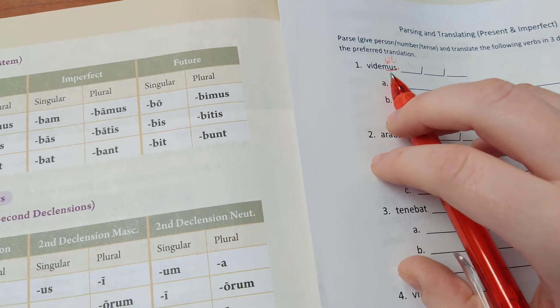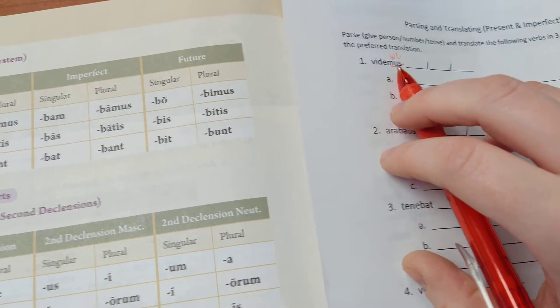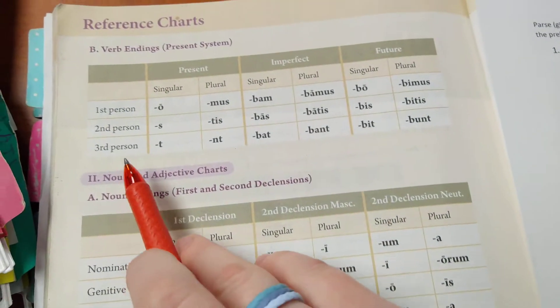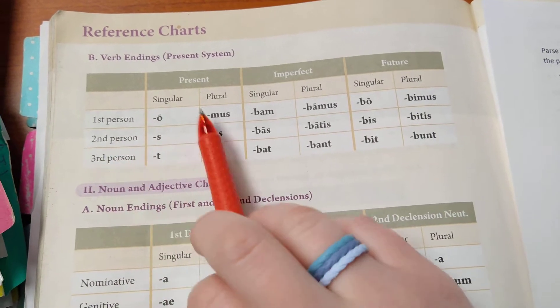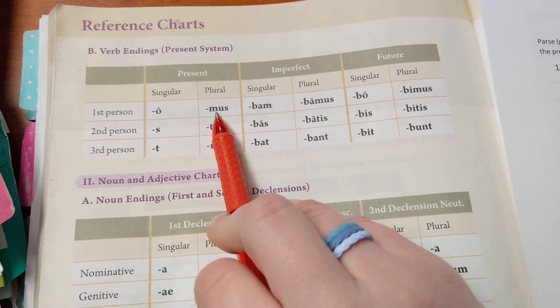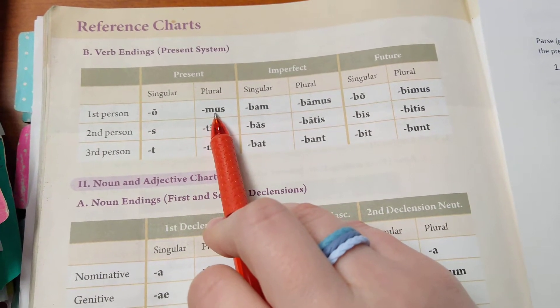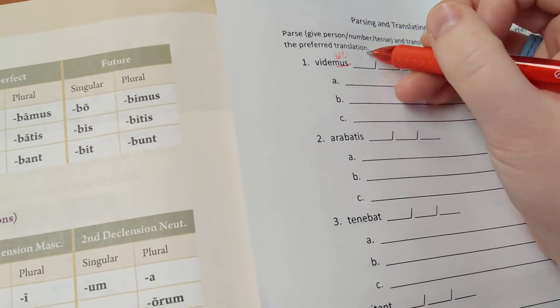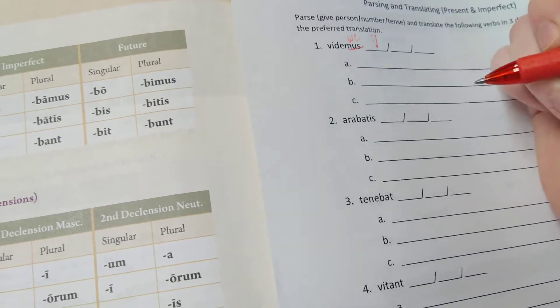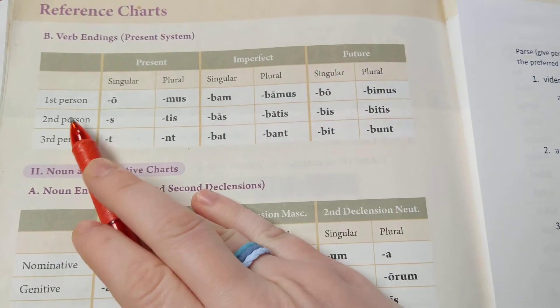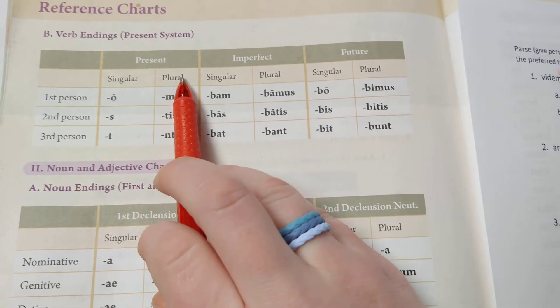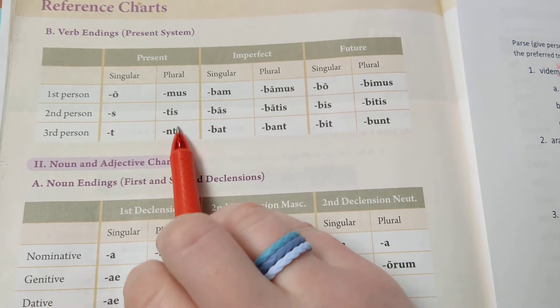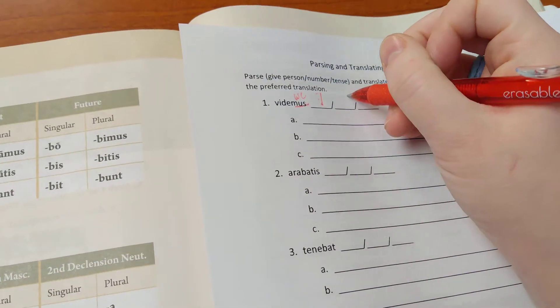To parse it, what we need to do is find that -mus ending in our verb endings chart. We're going to go over here and notice -mus is right here. The first question we answer is what row is it in? It's in the first person row, so we're going to write a 1 for first person. Then we need to say what column is it in? It's in the plural column, so we just do PL for plural.